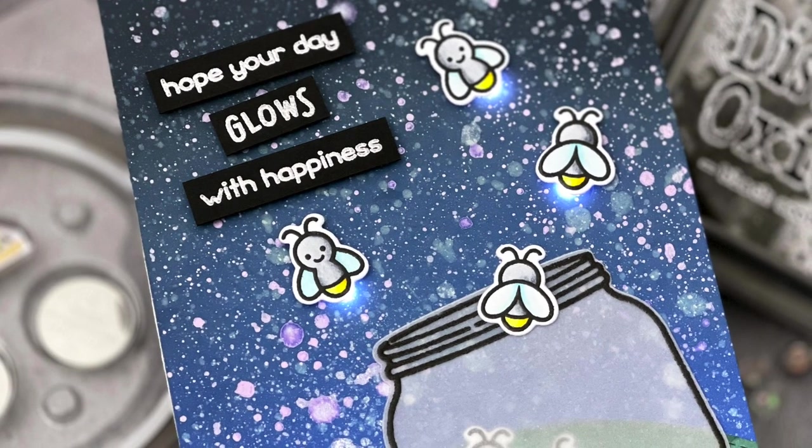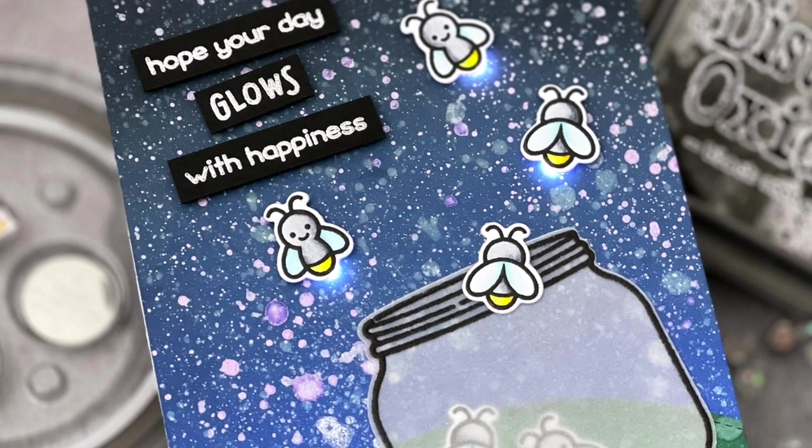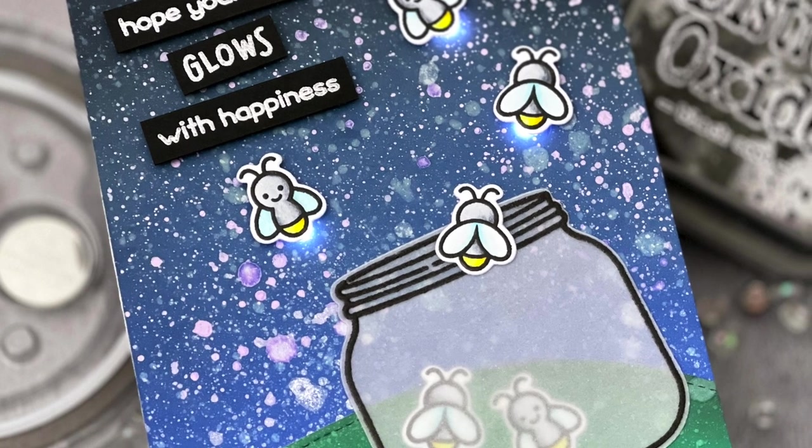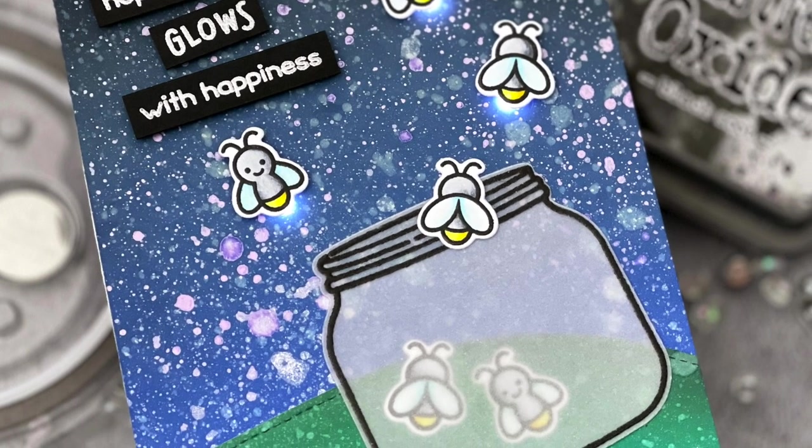Today we're going to create a parallel circuit to light up all three Fireflies. I'll share two ways to do that, one with the lights always on, and another with a battery holder for mailing.